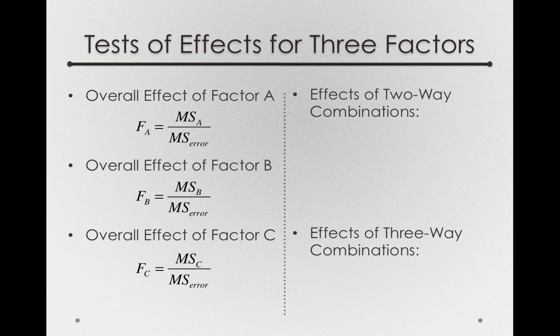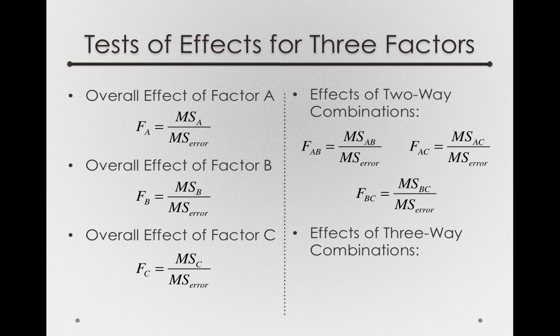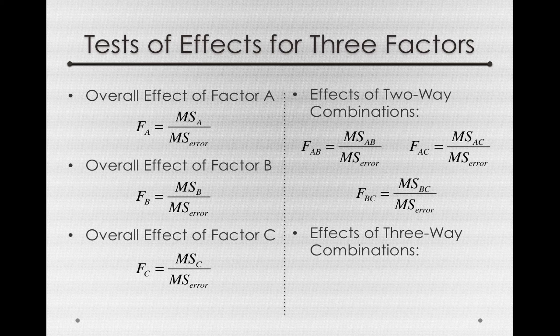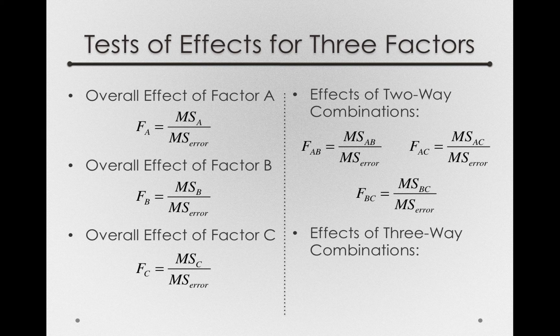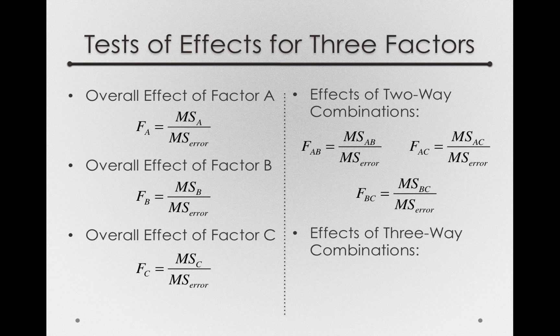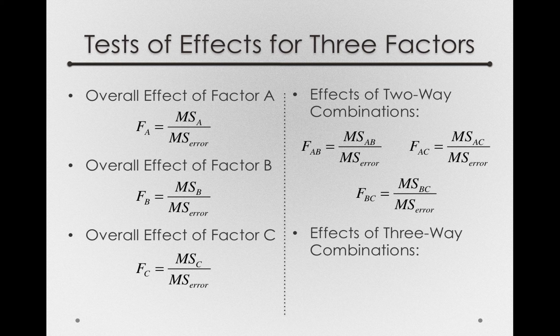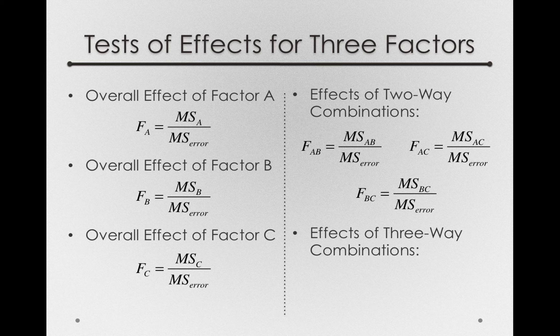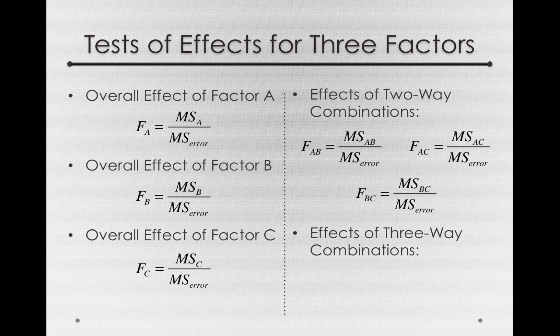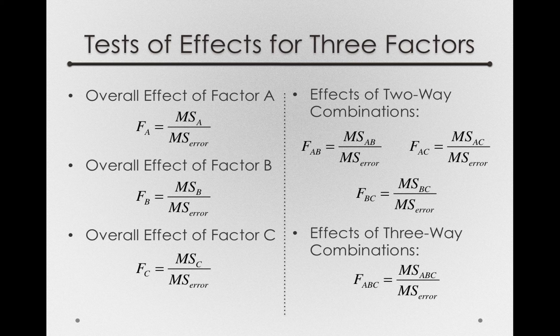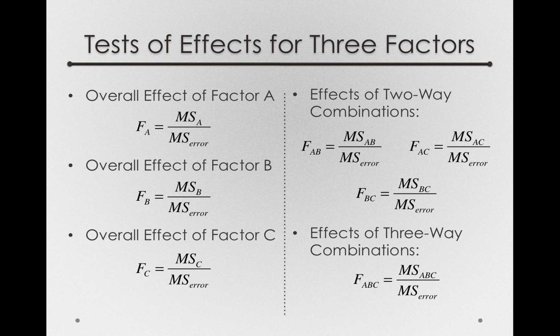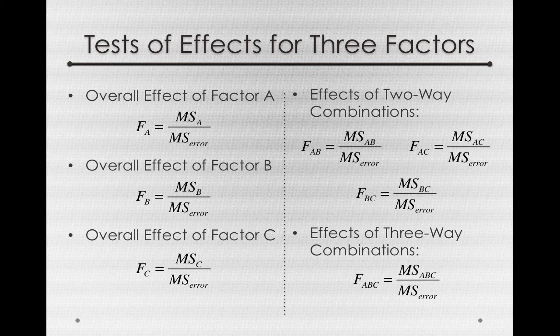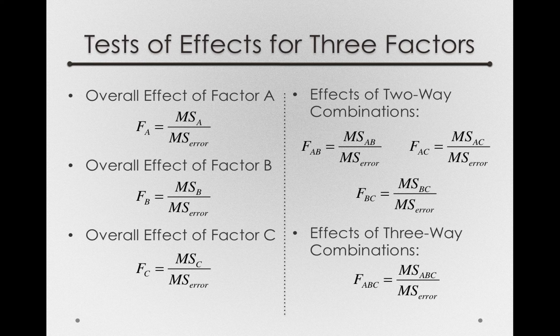For the two-way combinations, that is the two-way interactions, we'll have the three tests. So F_AB will be the mean square for the AB interaction divided by error. For the AC, we'll have the mean square for the AC interaction divided by error. And for the BC interaction, we'll have a mean square for BC divided by error. Finally, for the three-way interaction, we'll have a mean square associated with that final source, mean square for A, B, and C. Again, this will capture the degree to which any of the two-way interactions actually differ across the level of the third factor.